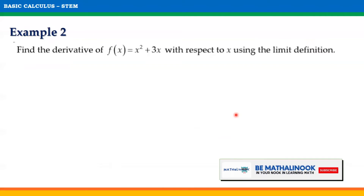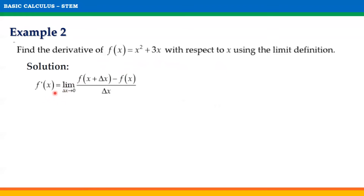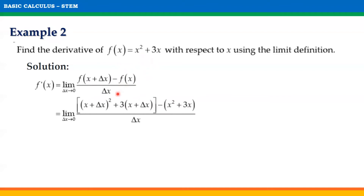Let us take another example. Find the derivative of f of x equals x squared plus 3x with respect to x using the limit definition. Again, to find the derivative of a function, we will use the formula f prime of x is equal to the limit of f of x plus delta x minus f of x over delta x as delta x approaches 0. We simply substitute x plus delta x to the variable x on the given function and substitute x squared plus 3x on f of x in this formula. This gives us x plus delta x quantity squared plus 3 times x plus delta x, minus the function x squared plus 3x, divided by delta x as delta x approaches 0.